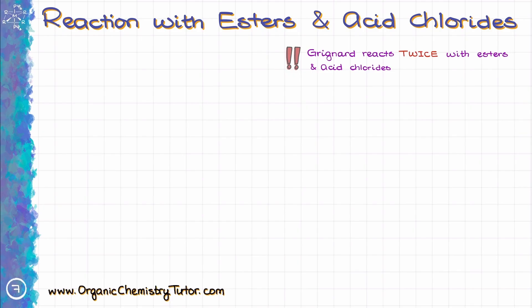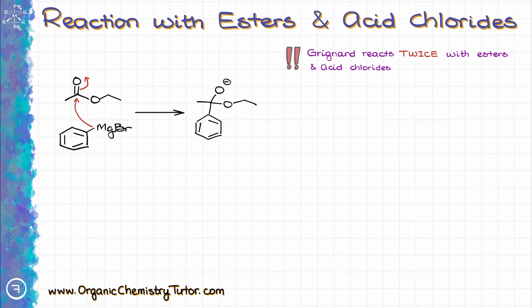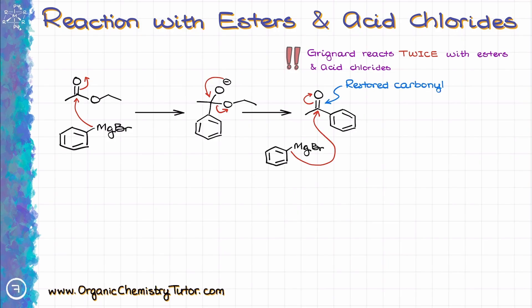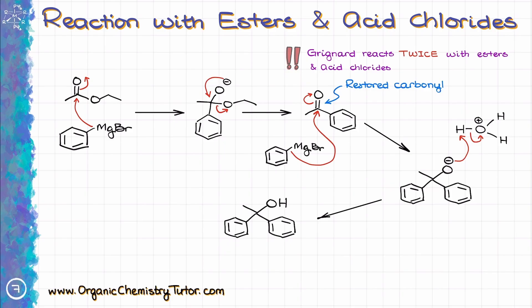What about esters? The reaction proceeds in a very similar fashion. If I treat ethyl acetate with phenylmagnesium bromide, the initial round of addition gives a negatively charged intermediate. That intermediate pushes away the alkoxide leaving group, restoring the carbonyl, and the reaction happens one more time with another equivalent of phenylmagnesium bromide, eventually giving a tertiary alcohol as the final product. The idea is the same: the reaction happens twice, and you end up with a tertiary alcohol. You will also learn how the Grignard reagent reacts with nitriles and amides later in your course.